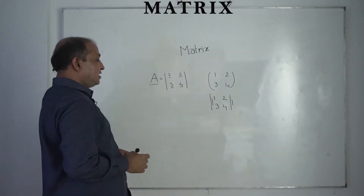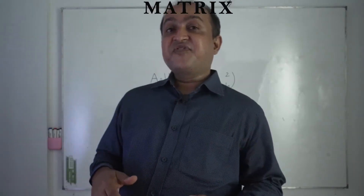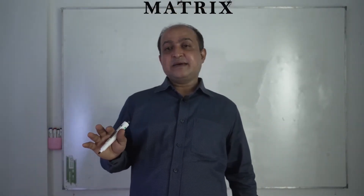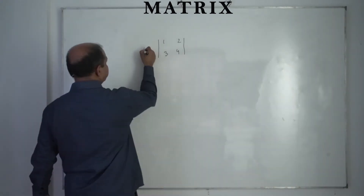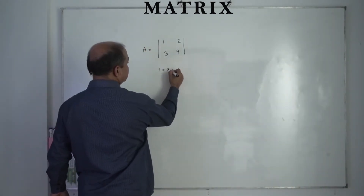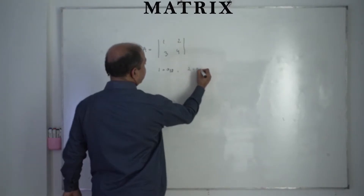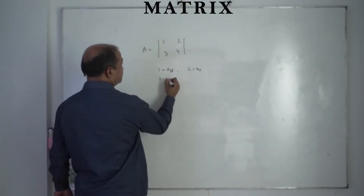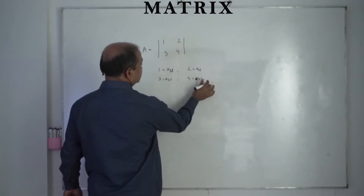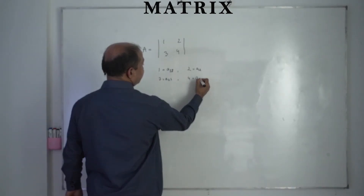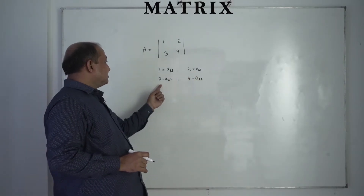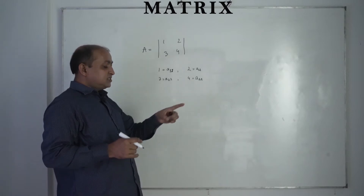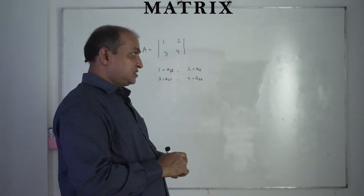There are different types of matrix. A matrix first expresses the position of the row, then the position of the column. For example, in a 2x2 matrix with elements 1, 2, 3, 4: element 1 is row 1, column 1; element 2 is row 1, column 2; element 3 is row 2, column 1; and element 4 is row 2, column 2.